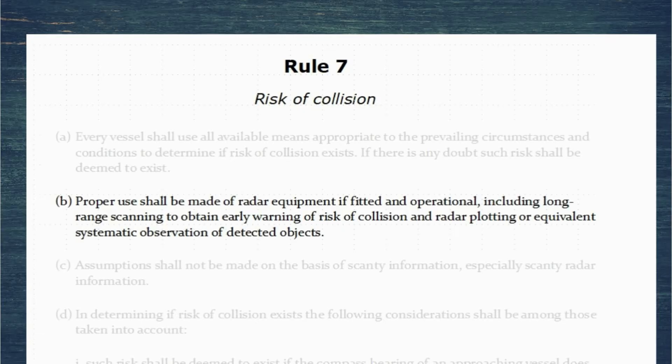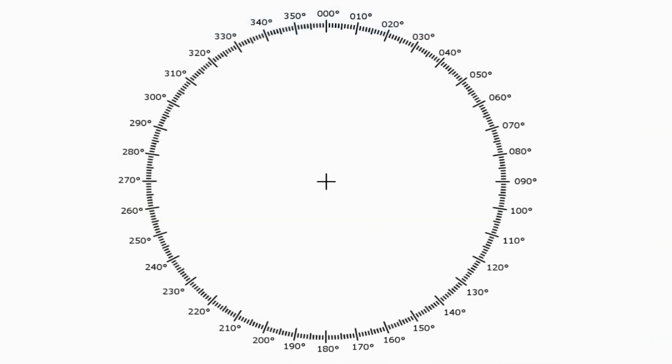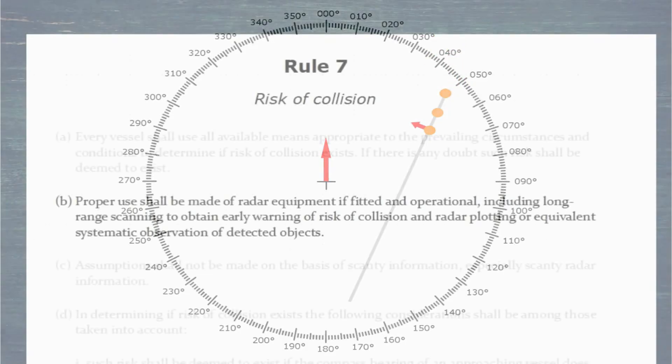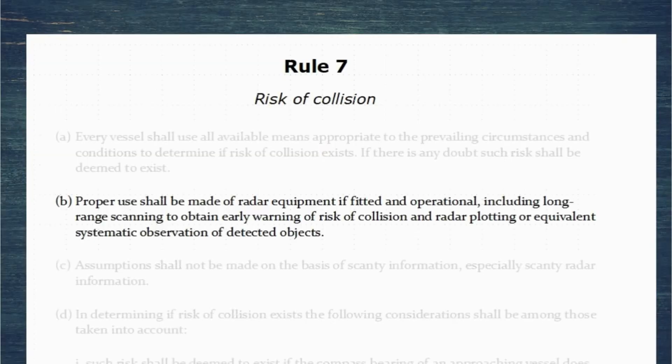Now radar plotting itself I covered in a different video, which I'll link up in the card at the top. But what this paragraph of the rule is saying is we need to use systematic observation. So radar plotting, we're talking about taking a series of plots on the radar, or visual plotting, we're looking at taking a series of compass bearings. We need to be systematic about it. We can't just look and take one snapshot in time. We need to do it systematically and observe it over a period of time to determine if risk of collision exists.